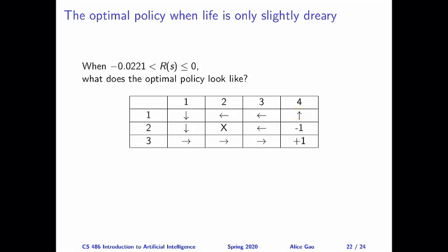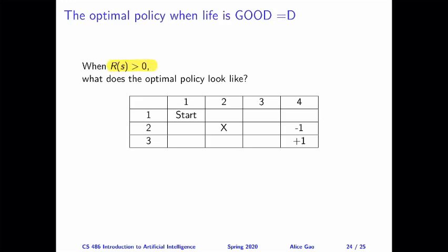Let's look at our final case. In this case, the reward of reaching any non-goal state is positive — R(S) is strictly greater than zero. This reminds me of a friend I made during my PhD who, whenever the food was ready, would look at it and say, 'Alice, life is good.' So this is exactly the case when life is good. I don't think I need to say too much because it's quite intuitive — the reward is positive. Take a guess, think about what the optimal policy looks like, and then keep watching for the answer.